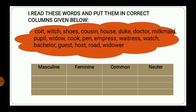Now let's move on to Exercise 1. Exercise 1 says: read these words and put them in the correct columns given below. This is the first exercise of your book. You can see that in the cloud there are different nouns written, and below it there are four columns — masculine, feminine, common, neuter. So you just have to search the noun, find which are of masculine nature and put them under masculine, those that are feminine under feminine, those that are common under the common category, and nouns that are neuter under neuter.